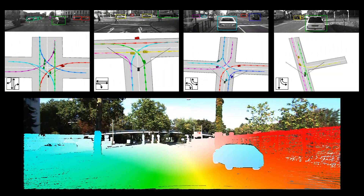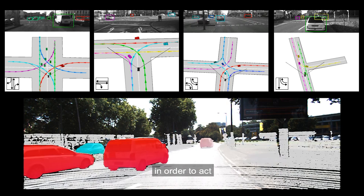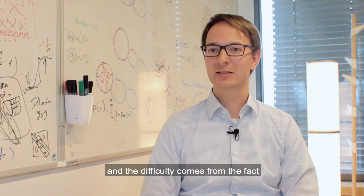For example, self-driving cars need to perceive the environment in order to act, and the difficulty comes from the fact that the machine only observes 2D images of the 3D environment and needs to fill in this missing information.